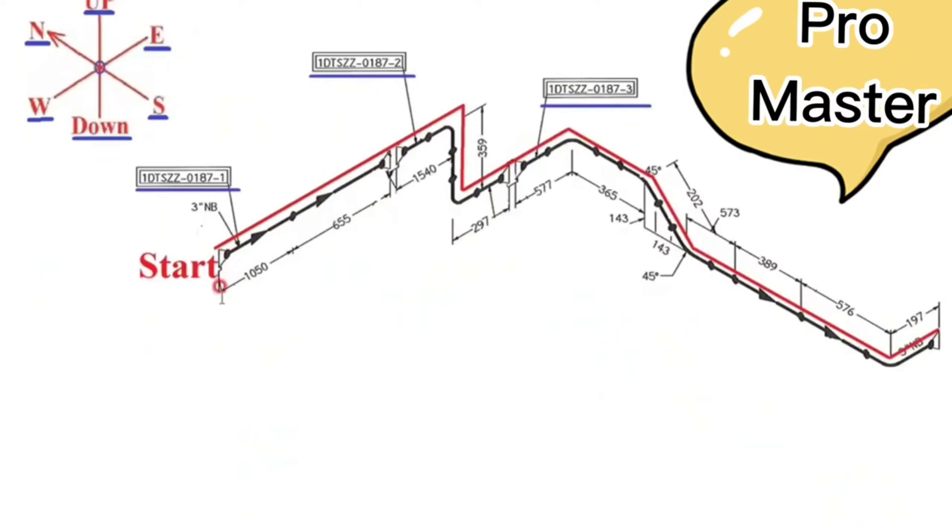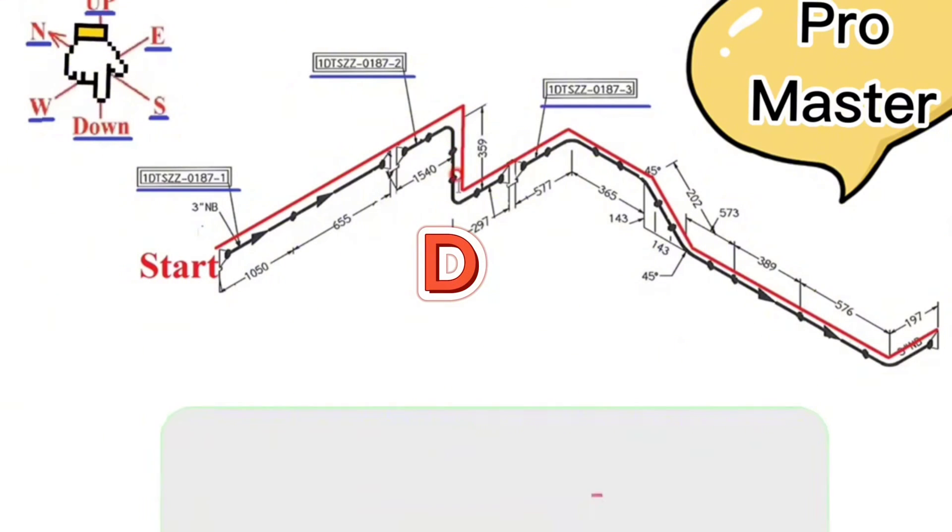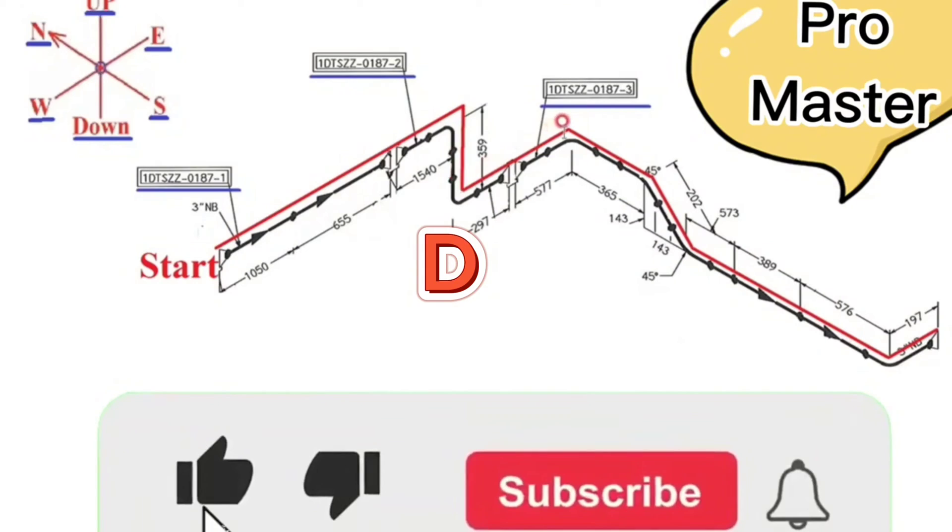Let's quickly repeat what we learned in the drawing. The pipe starts from this point and travels to the east direction. Turns to down from here. Turns from here again to the east direction.